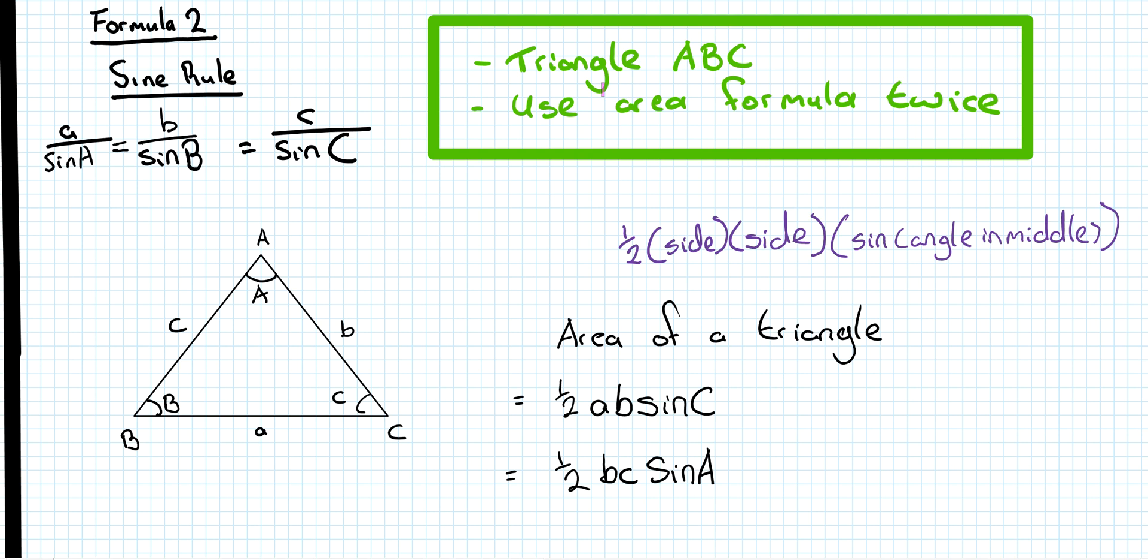So in this one, the things that you really need to know is that you need a triangle ABC and that you're going to use the area formula twice. When drawing out your triangle, make sure that the angles and the points of the triangle get capitals, whereas the sides always get small letters. And the angle opposite side A is angle A, and the side opposite angle B is side B, and the side opposite angle C is side C.